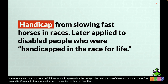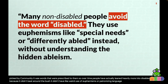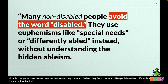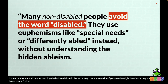Over time, people leaned more into 'disabled' because it didn't beat around the bush or use weird euphemisms and patronizing language. It's actually many non-disabled people who say 'we can't say that' and reach for words like 'special needs' or 'differently abled' — without understanding the hidden ableism. In the same way that people might be afraid to say 'Black' or 'gay,' those are not bad words. People are actively identifying as those things. Let's use that terminology.